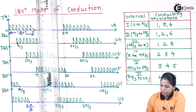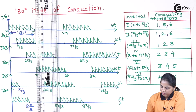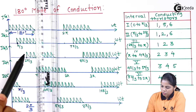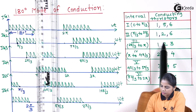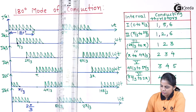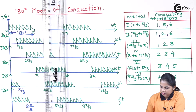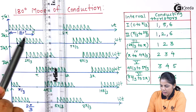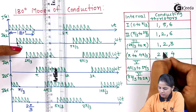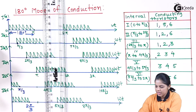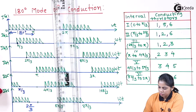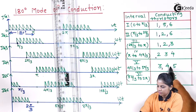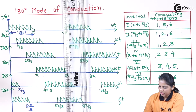Similarly, from 2pi/3 to pi: SCR1 is on, SCR2 is on, and SCR3 is also on — so SCRs 1, 2, and 3. Next, from pi to 4pi/3: SCR2 is on, SCR3 is on, and SCR4 is on. From 4pi/3 to 5pi/3: SCR3, SCR4, and SCR5 are on.